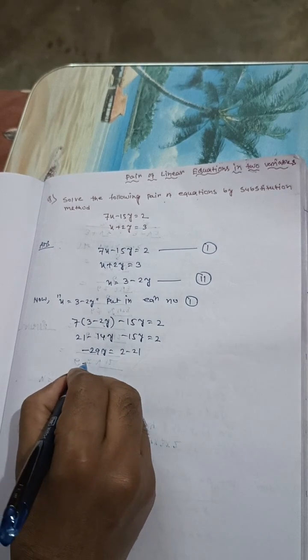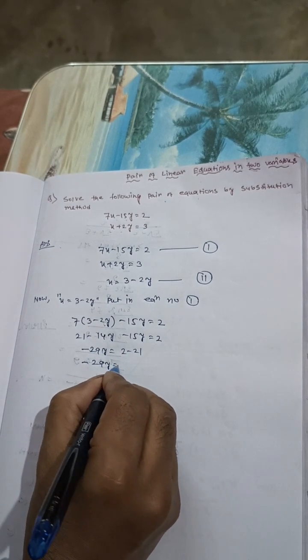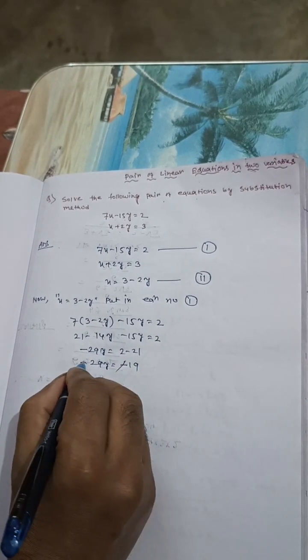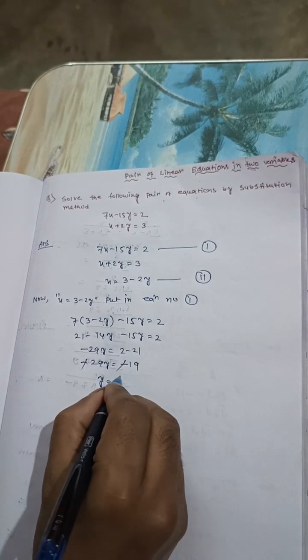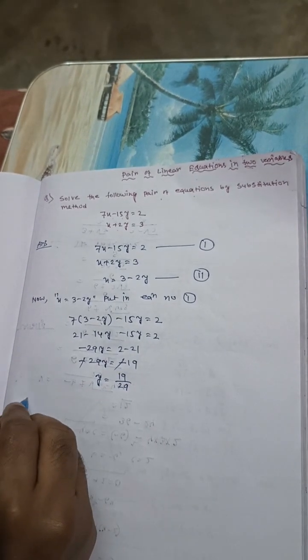That means minus 29y equals minus 19. Minus and minus cancel, so y equals 19 by 29.